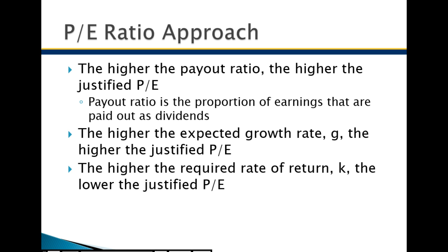The higher the payout ratio, the higher the justified PE — the more money paid out as dividends, the more valuable the stock to investors. The higher the growth rate G, the higher the justified PE ratio. Companies with low growth projections generally have low PEs; companies with high growth projections have PEs that can be 25, 30, or 40 times earnings. Sluggish companies may trade at PE ratios of 11 or 12. Growth has a lot to do with changes in the PE multiple.